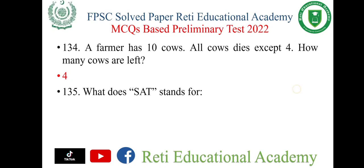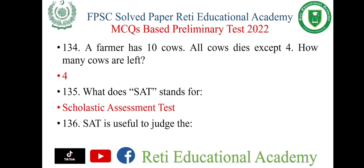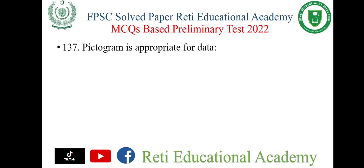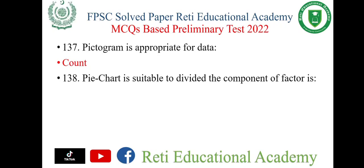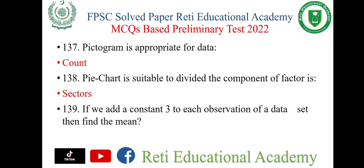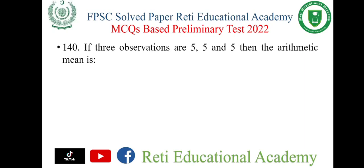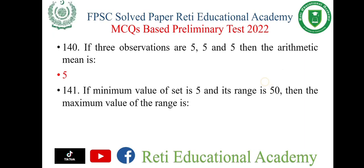Question number 135: What does SAT stand for? The right option is scholastic assessment test. Question number 136: SAT is useful to judge the fairness and objectiveness. Question number 137: Pictogram is appropriate for data count. Question number 138: If we add a constant 3 to each observation of a data set, then find the mean — the mean is increased by 3. Question number 139: If three observations are 5, 5, and 5, then the arithmetic mean is also 5.